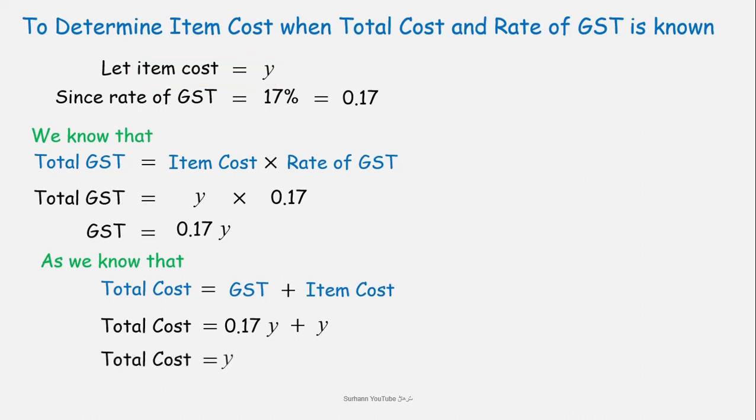Now simplify it. Y is common in both values. Take it out. Now more simplify. Add 0.17 and 1, we will get 1.17.